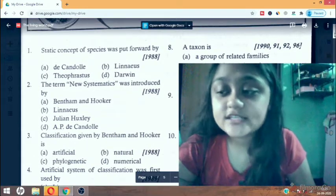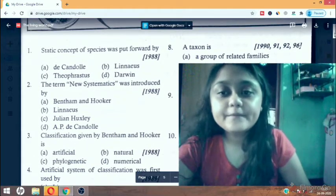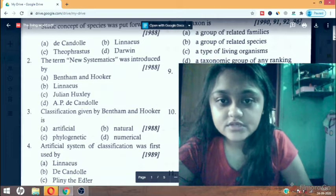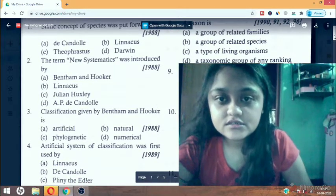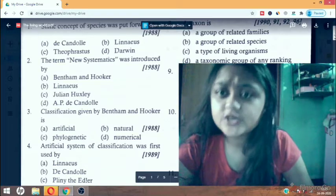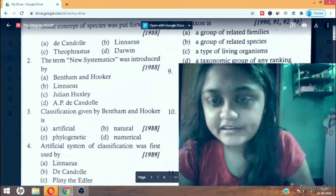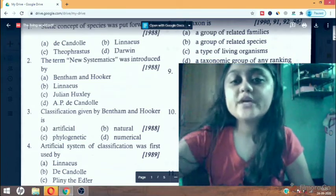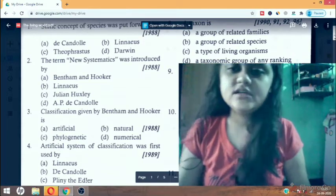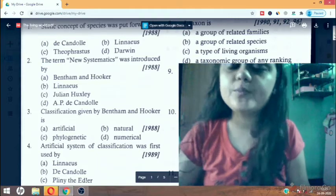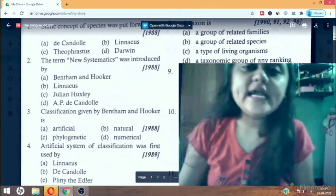A taxon is - a group of related families, a group of related species, a type of living organism, a taxonomic group of any ranking. The answer is D, taxonomic group of any ranking. Taxon is a taxonomic group of any ranking.